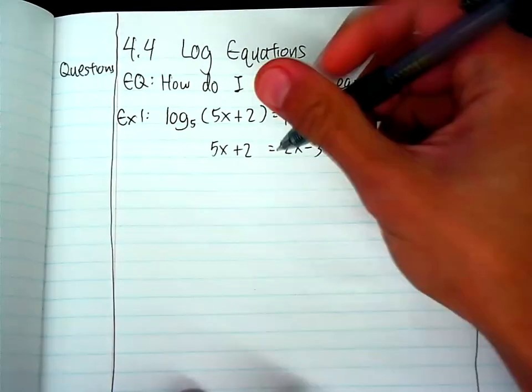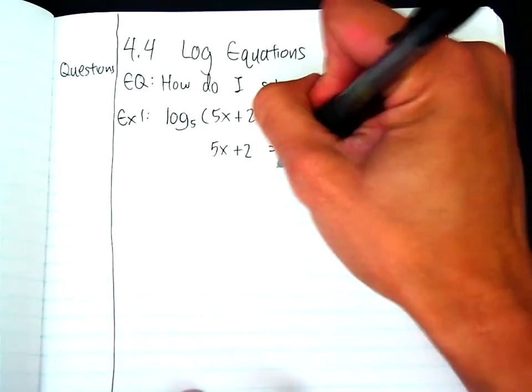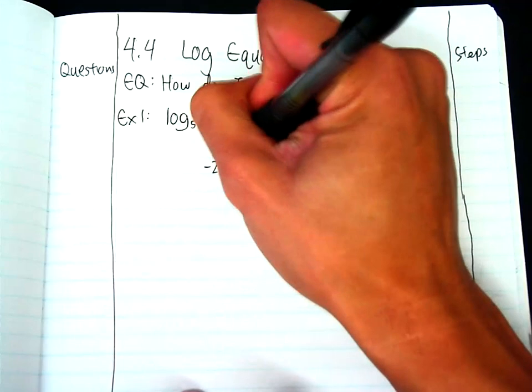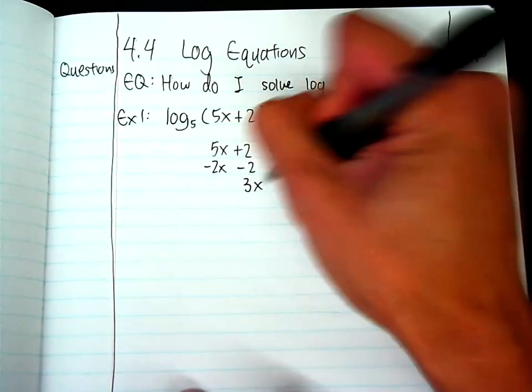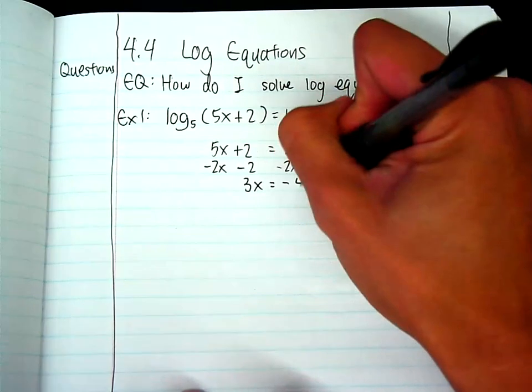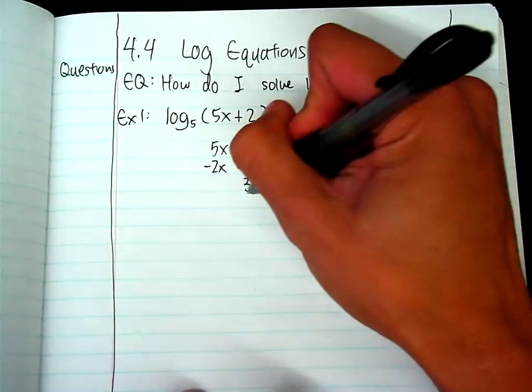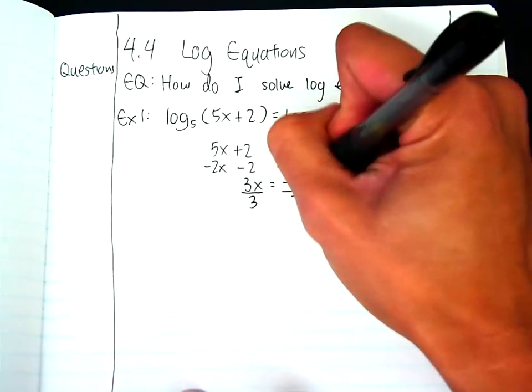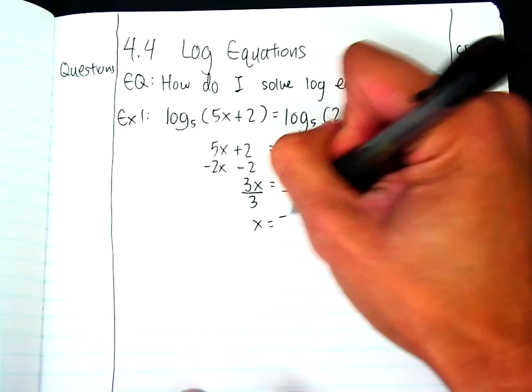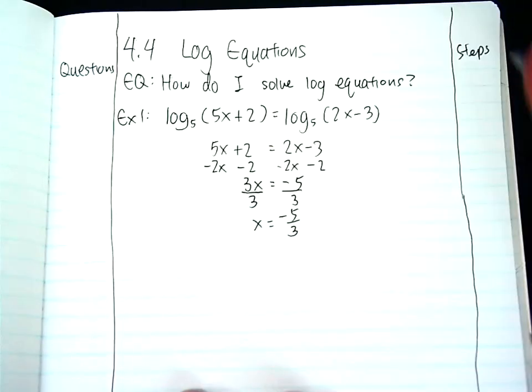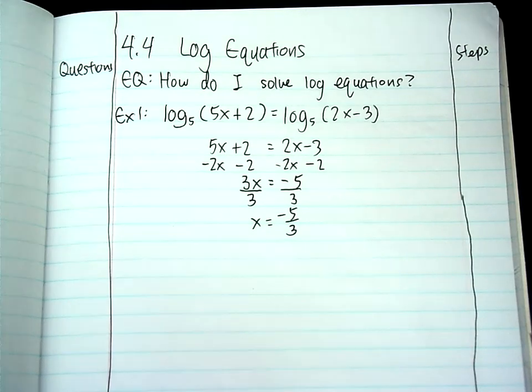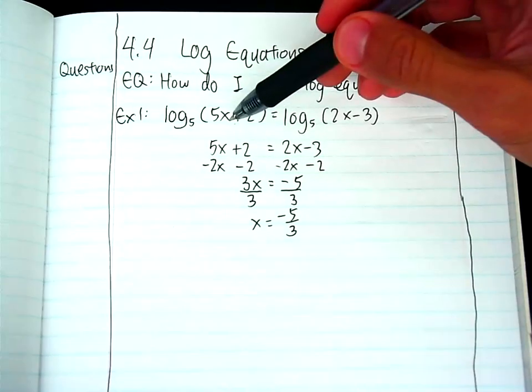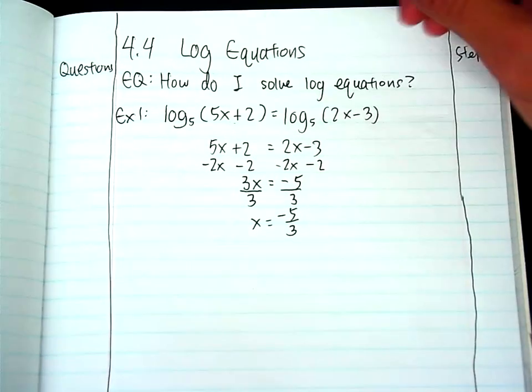And then from there, I'll just solve for x. So I'll subtract 2x from both sides. I will subtract 2 from both sides. So I'll end up with 3x equals negative 5. And then I'll divide by 3.